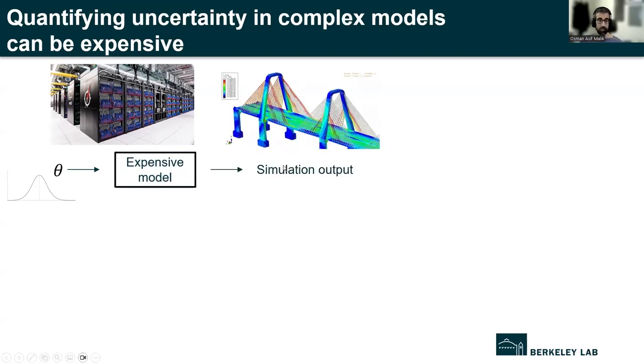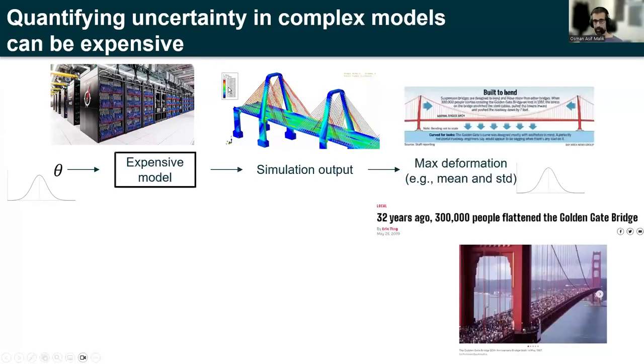For the sake of this example, suppose we have a model simulating a bridge. And suppose that maybe we're interested in some quantity about this bridge. So maybe, for example, what is the maximum deformation of the bridge under a variety of conditions like different loads, different winds, different material properties, and so on. And as I said earlier, those inputs are assumed to be random to have some distribution assigned to them.